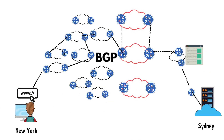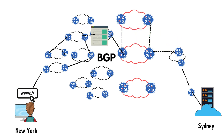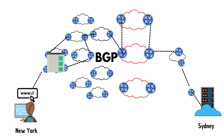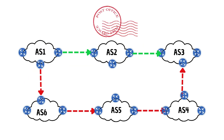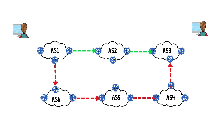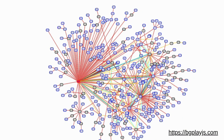The protocol they use to exchange routing information is called Border Gateway Protocol, or BGP. It is considered to be the postal service of the internet. When a user in New York loads a website with origin servers in Sydney, Australia, BGP is the protocol that enables that communication to happen quickly and efficiently. Autonomous systems are like individual post office branches.